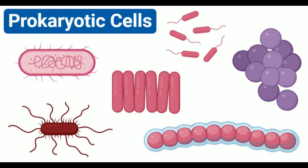Eukaryotes Definition: Eukaryotes are cells that are complex in structure and function, as they have a membrane-bound, well-defined nucleus and other membrane-bound organelles. The term eukaryote is derived from Greek words: eu, meaning 'true,' and karyon, meaning 'nucleus.' Eukaryotic cells have a more advanced structural composition when compared to prokaryotes and are capable of performing more complex functions than prokaryotic cells.